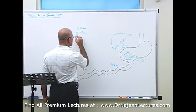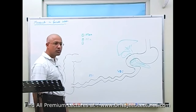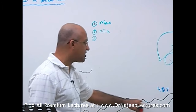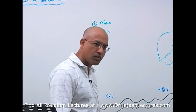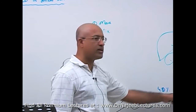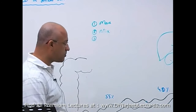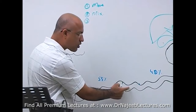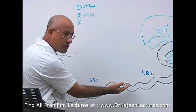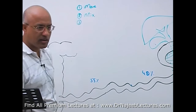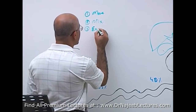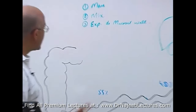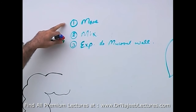There is one more purpose of small intestinal movement beyond moving and mixing the content. When the contents of the small intestine are churned, more and more areas of the content are exposed to the mucosal wall so that the mucosal wall can absorb the digested material. So the third purpose is exposure of the content to the mucosal wall for better absorption.